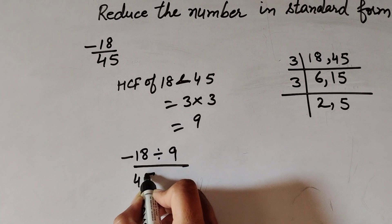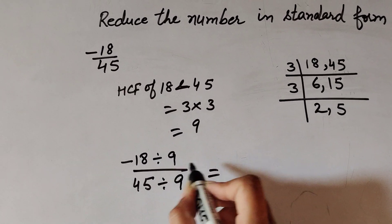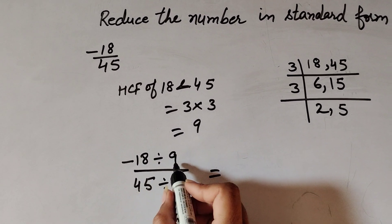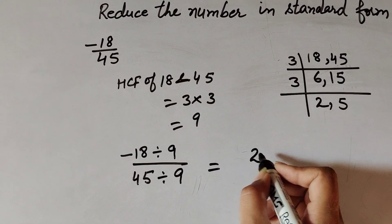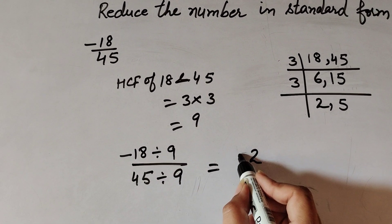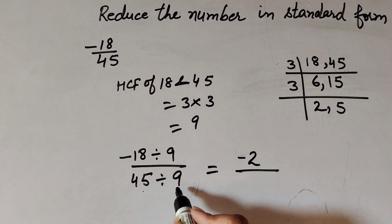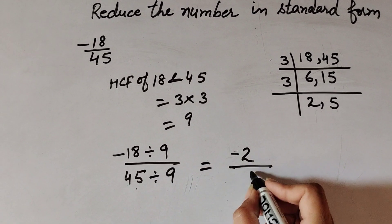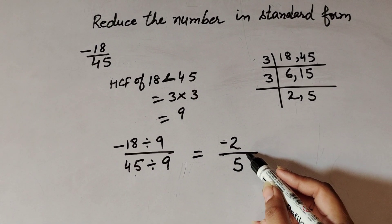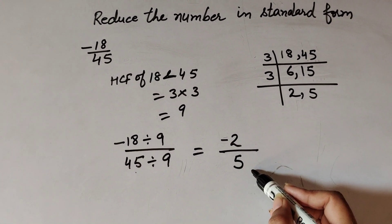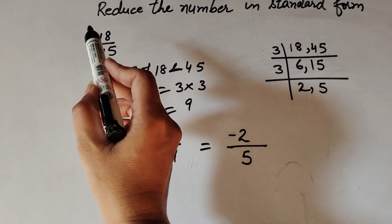-18 divided by 9 gives -2, and 45 divided by 9 gives 5. So -2/5 is the standard form of -18/45.